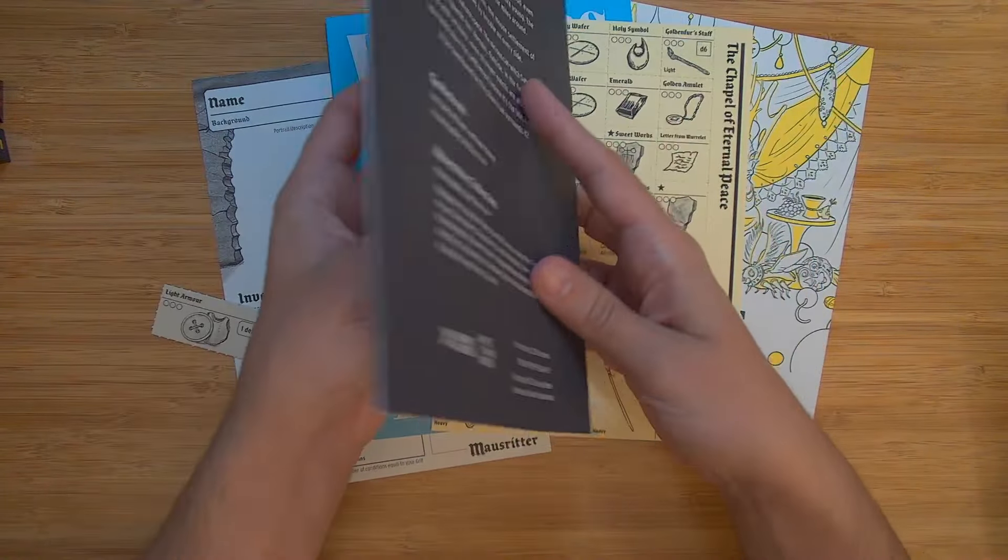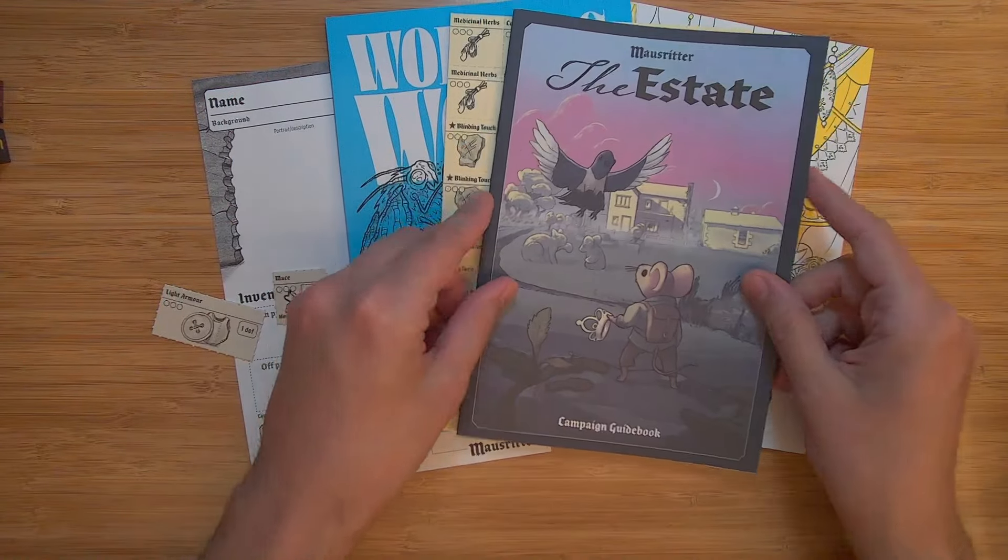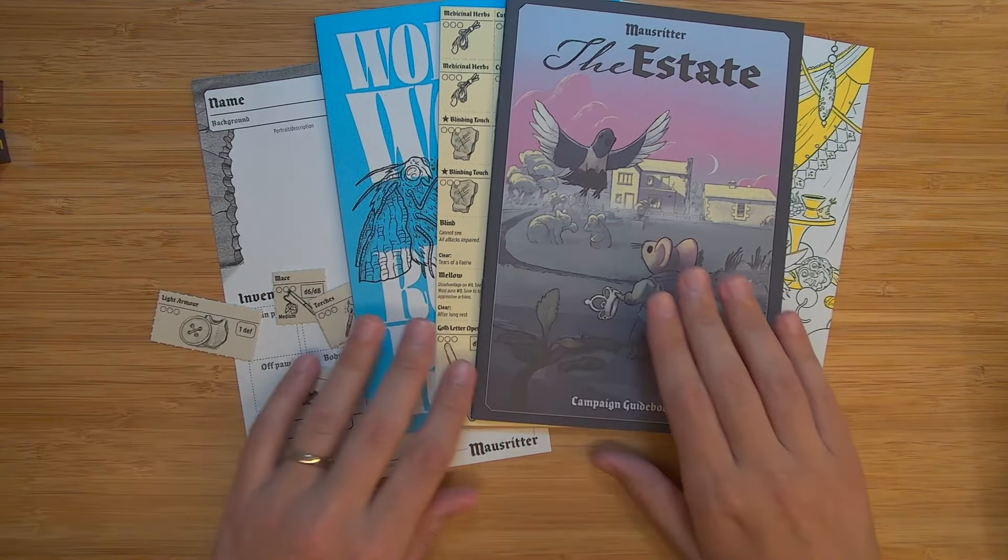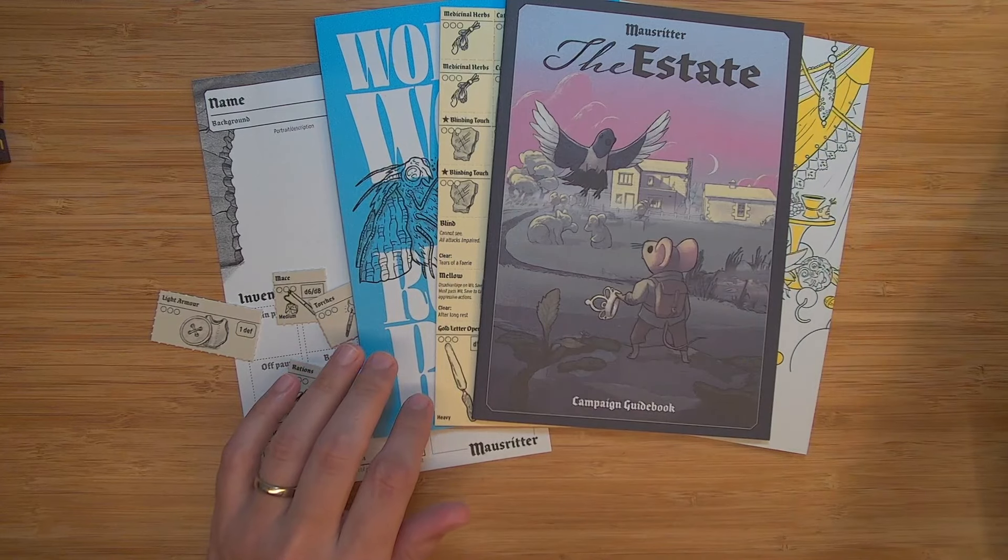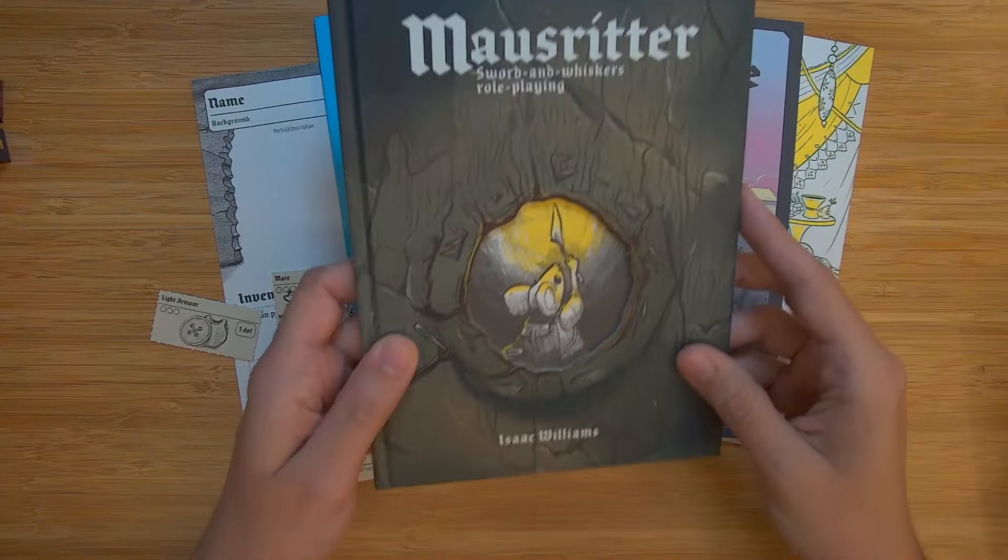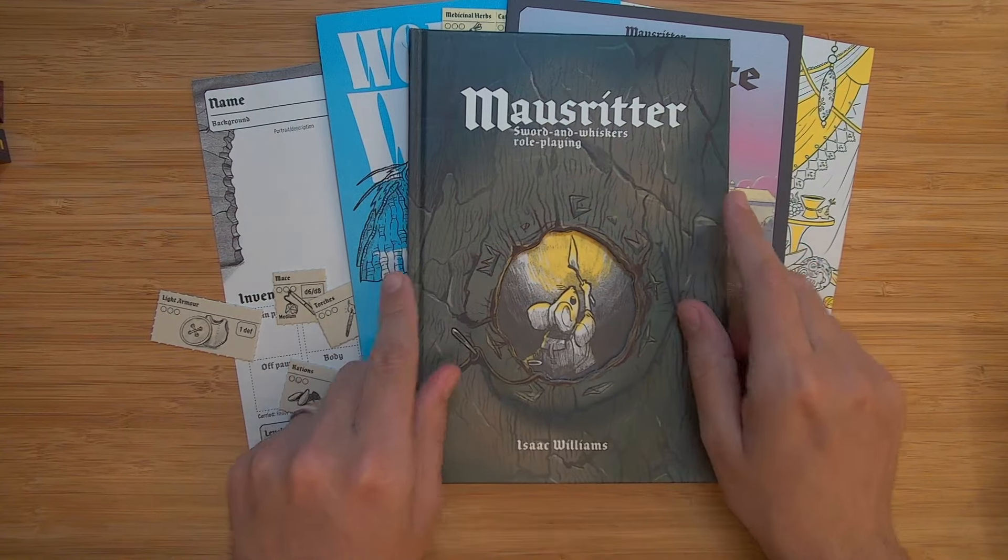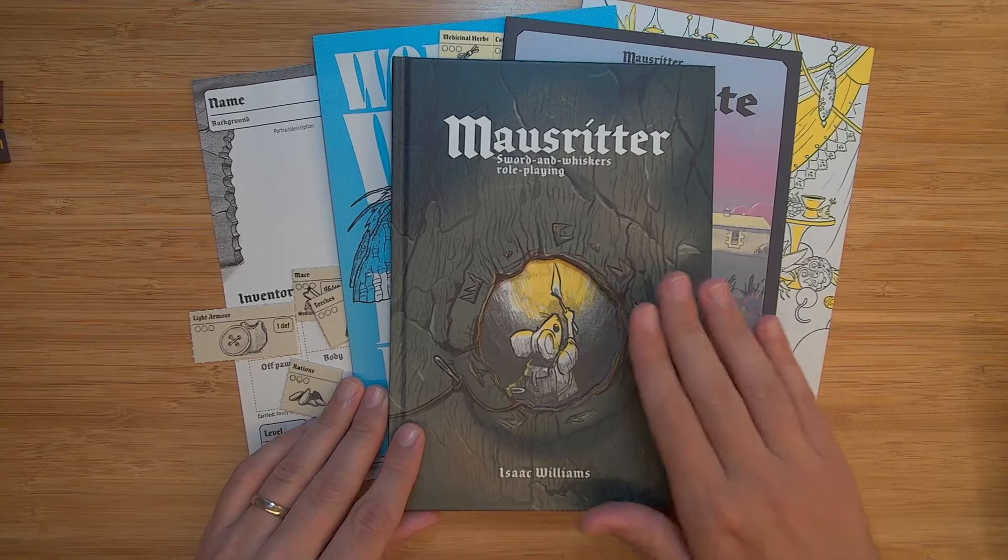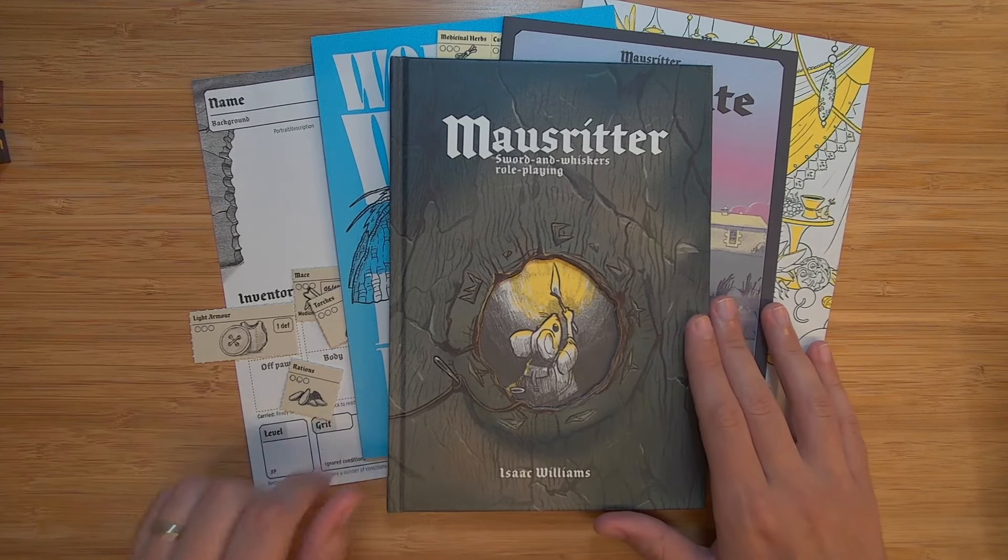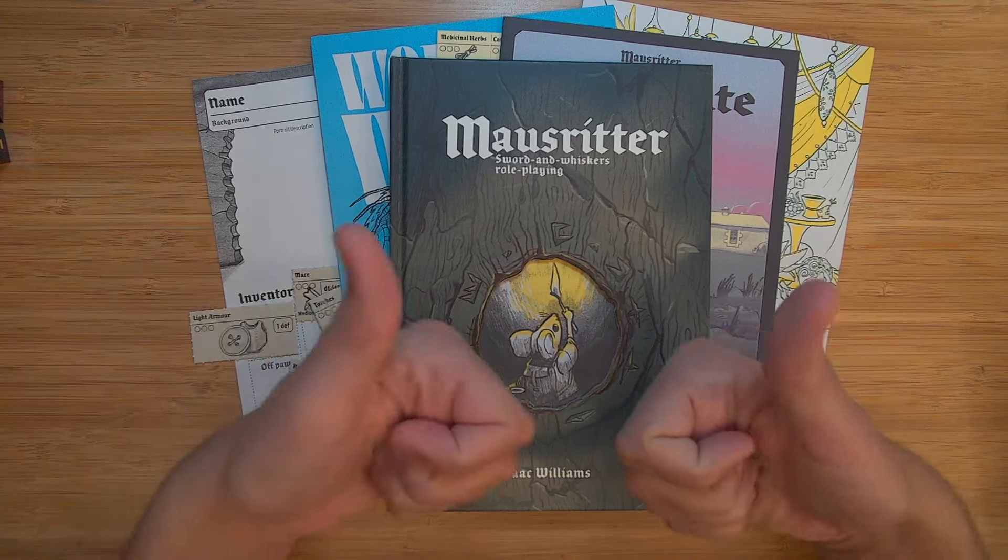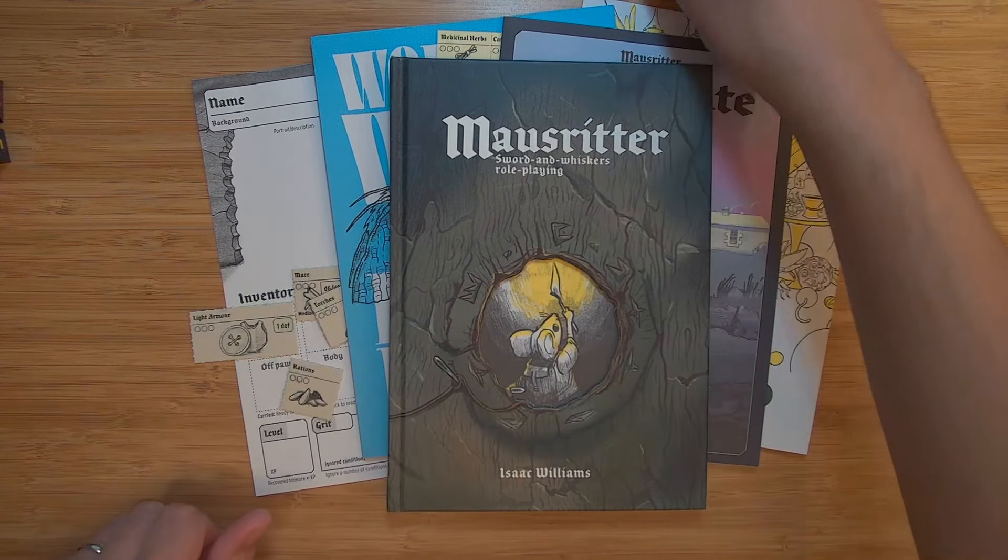So again, just absolutely charming. Whether or not you ever play Mouse Ritter, this is just packed with ideas that are S tier, absolutely S tier ideas for any table, whatever TTRPG you're playing. And if you want to take a break from whatever you're playing and try out Mouse Ritter, I would definitely, absolutely recommend it. Mouse Ritter, sword and whiskers role-playing, a very, very, very big thumbs up from me.